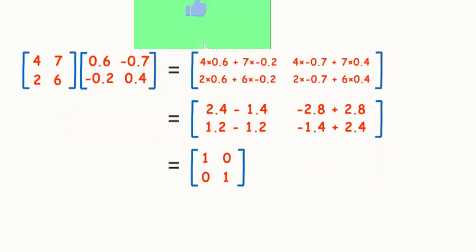So, here we are A into A inverse. You can do this simple multiplication by pausing the video and you see the answer will be equal to the identity matrix of two into two order.